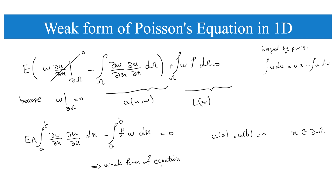For our one-dimensional domain along x, the domain is limited from a to b. Considering a fixed cross-section area A, d-omega changes to A dx, and the integral runs from a to b. The force f here is the force per unit length. This gives us the final weak form of the equation, which we can now discretize using finite element basis functions.